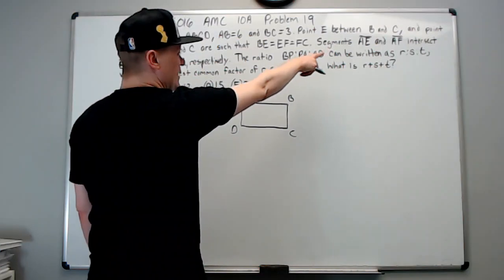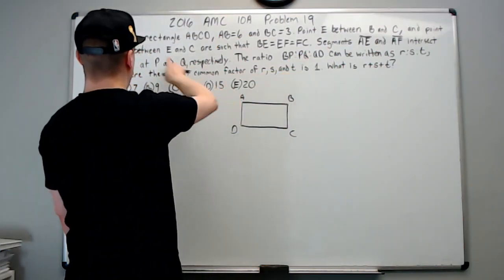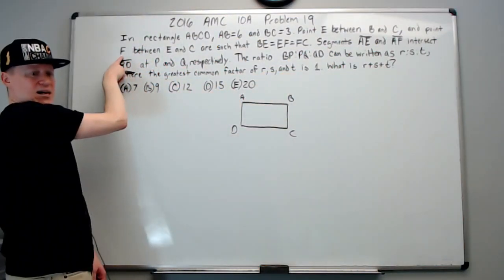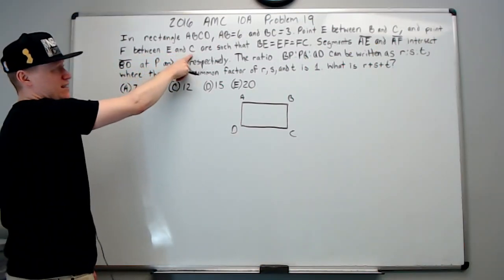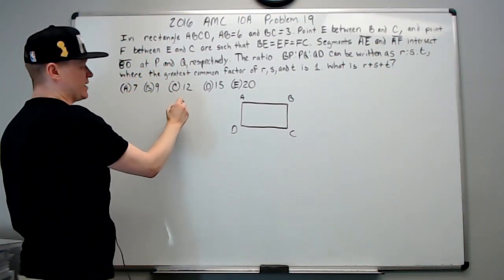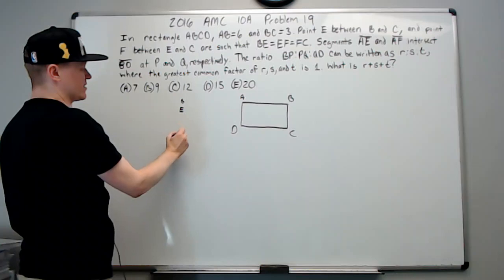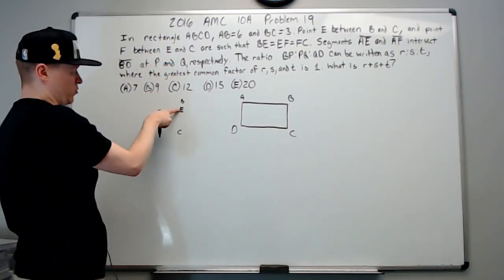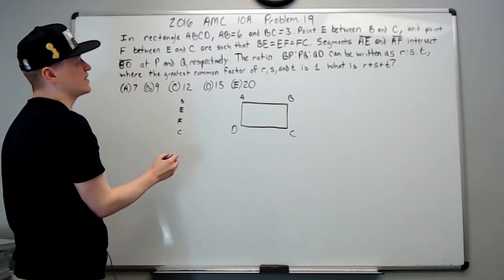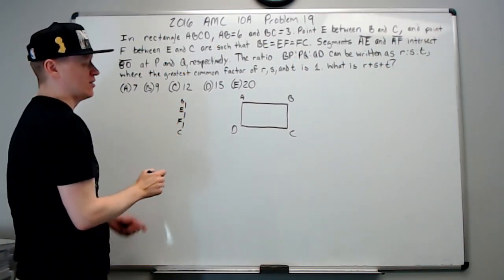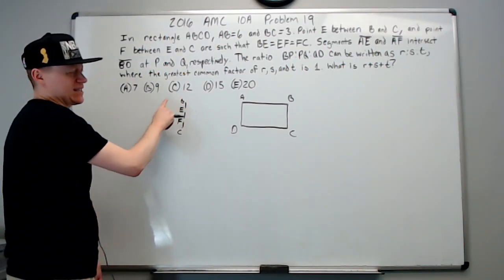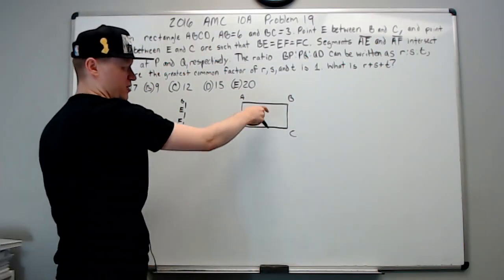All right, so then what, E is between B and C, and F between E and C. So again it's going to go B, E, and then C's down here, and F is between E and C, like this, such that BE, EF, and FC are all equal.